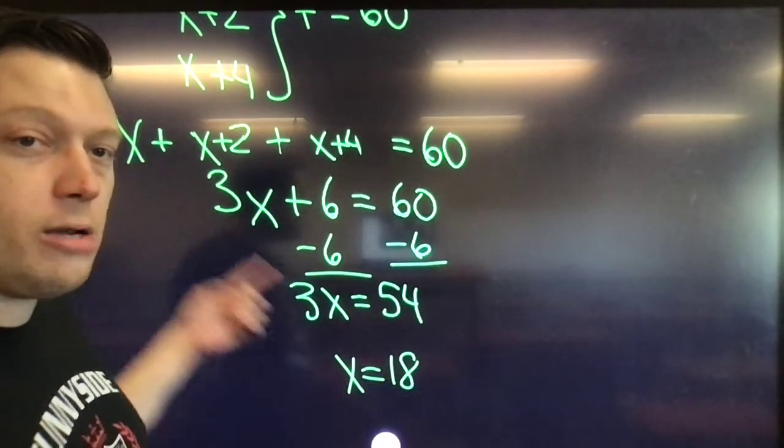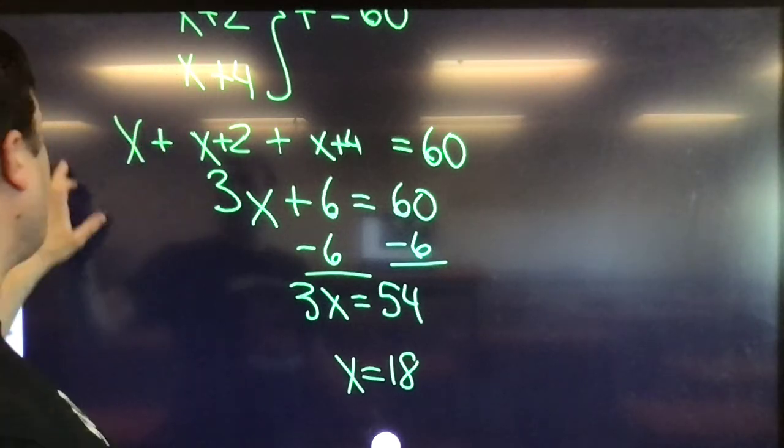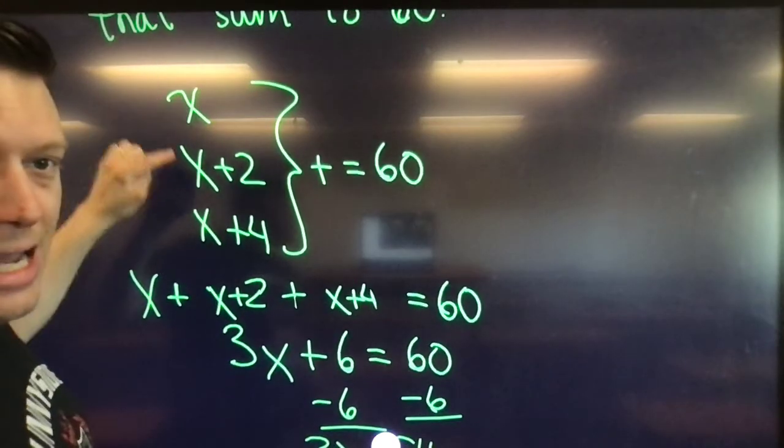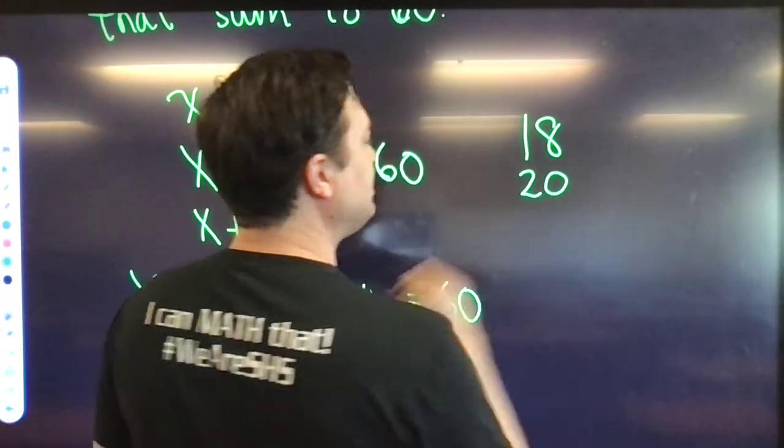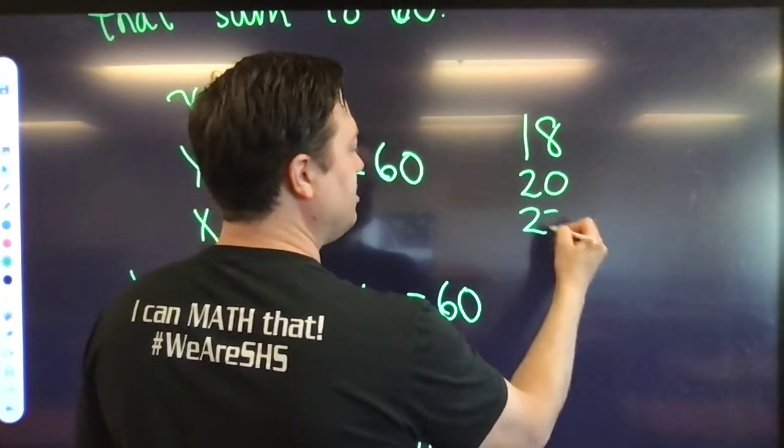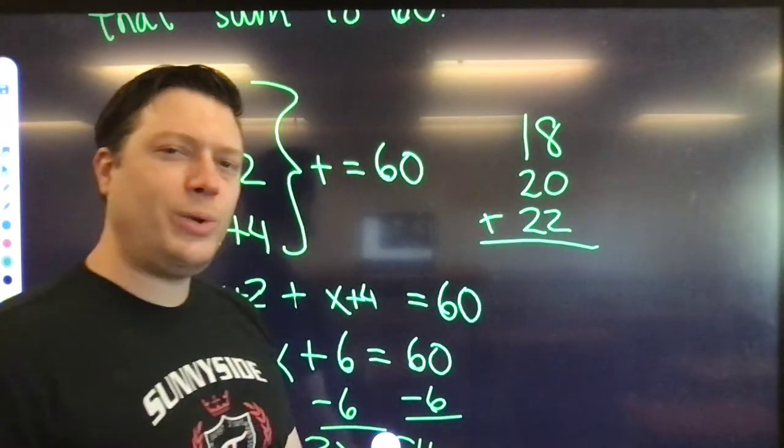But if you needed to, you could take that number and put it back up into what we did here. You could do 18, 18 plus 2, 18 plus 4. Does that work? 18, 18 plus 2, and 18 plus 4? When you add them together, do we get 60?